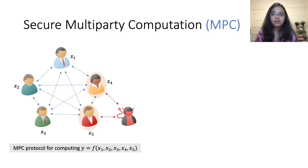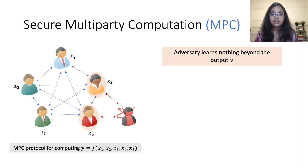Secure multi-party computation, or MPC, is an interactive protocol that allows a group of mutually distrusting parties to jointly compute a function on their private inputs. The security of MPC guarantees that an adversary who corrupts a subset of the parties should not learn anything beyond the output of the function.